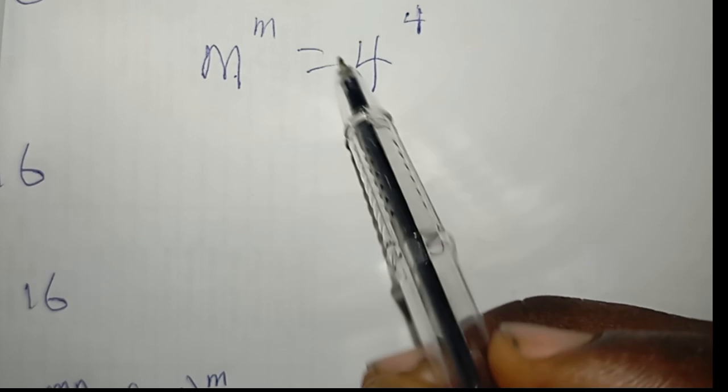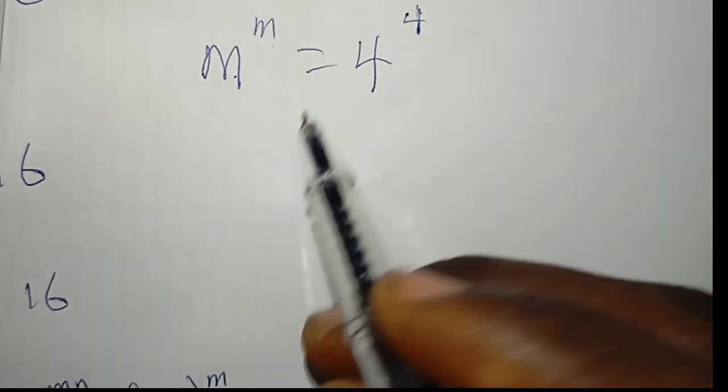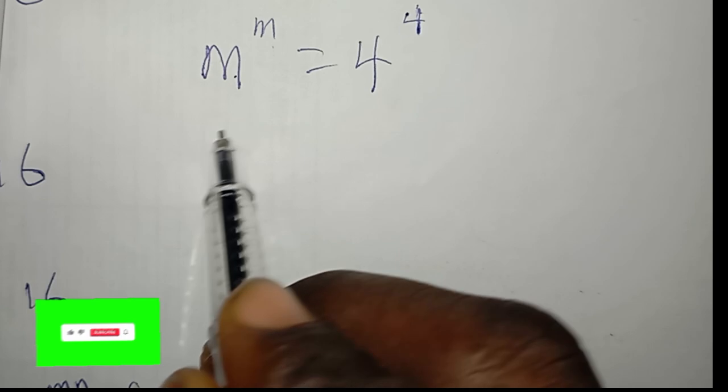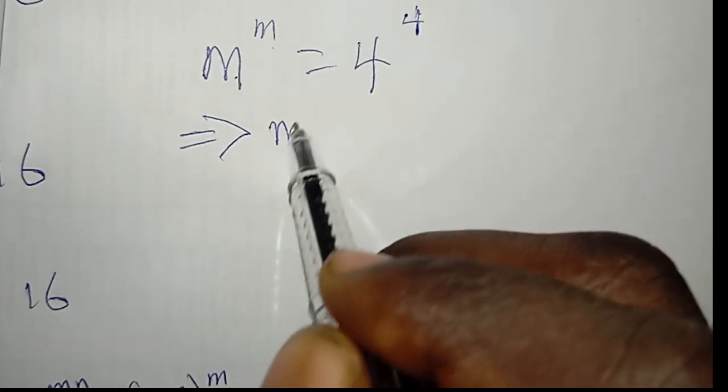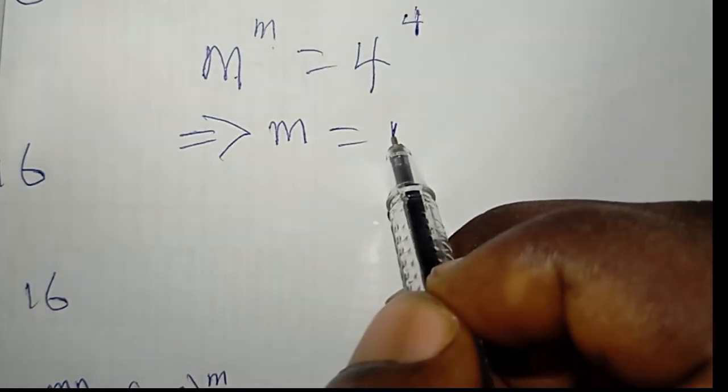So we have m^m = 4^4. And if you now compare the coefficients, this actually implies that m = 4.